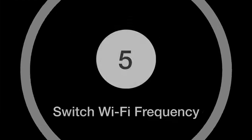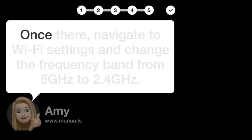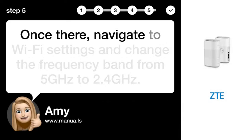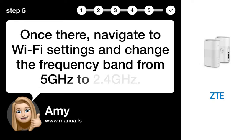Step 5: Switch Wi-Fi Frequency. Once there, navigate to Wi-Fi settings and change the frequency band from 5GHz to 2.4GHz.